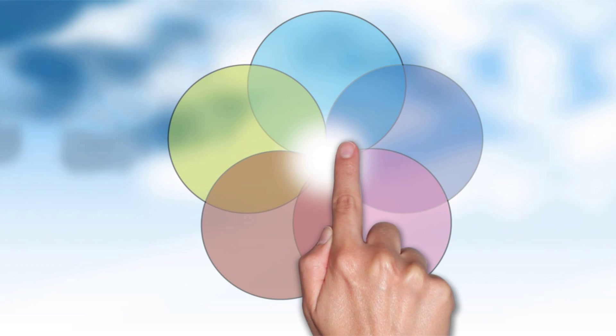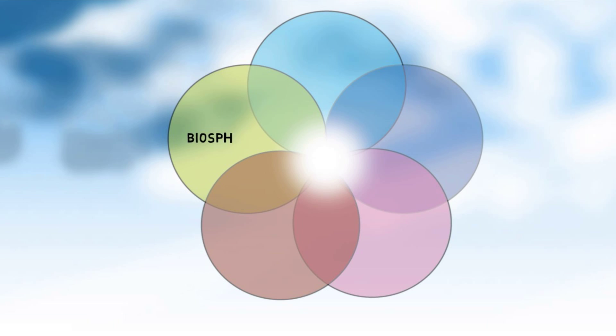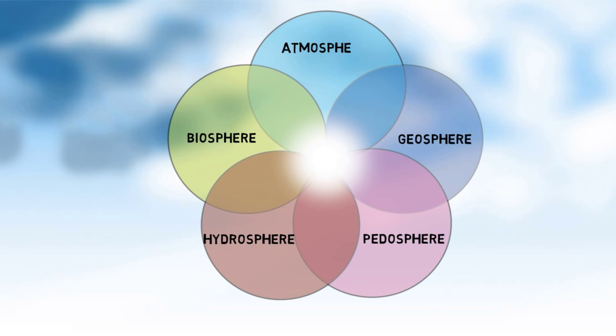As carbon is exchanged among the biosphere, petosphere, geosphere, hydrosphere, and atmosphere in a circular fashion, we can distinguish between a geological and a biological cycle.